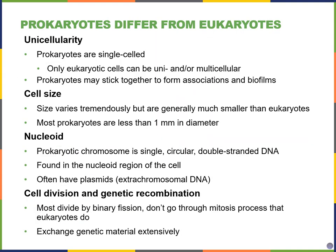Looking at the differences between prokaryotes and eukaryotes: prokaryotes are always single-celled, whereas eukaryotes can be single-celled or multicellular. Many prokaryotes, because they're single-celled, do come together and form associations and biofilms, where they attract more cells, secrete a sticky layer that protects them, and attract even more bacteria to the area. These prokaryotes are much smaller than eukaryotes — usually 10 or more times smaller — and most are less than 1 micrometer in diameter, which is why we cannot see most of them with the naked eye.